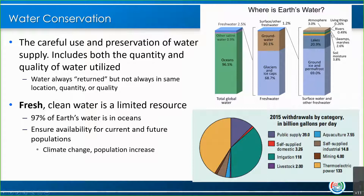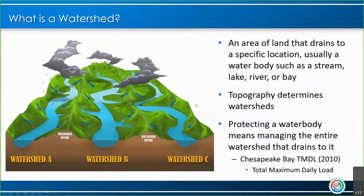You can also look at how the surface water is broken down as well. Water conservation is important because we want to make sure that we have availability for our current population and also future populations, taking into account things like climate change and population increase. This graphic from 2015 shows how the United States uses water in billion gallons per day and all the different ways that water is used.